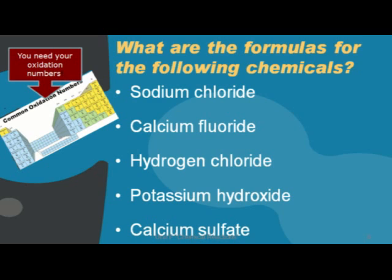Now let's look at some examples. What are the chemical formulas for the following chemicals? The first one is sodium chloride. Sodium is an alkaline metal found in the first group, and it loses one electron to become a positive one. Chlorine is found in the halogens, and it loses one electron.